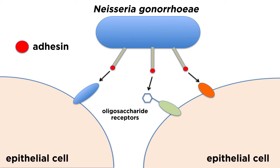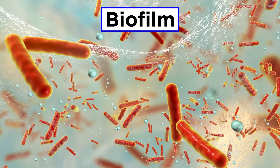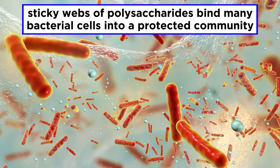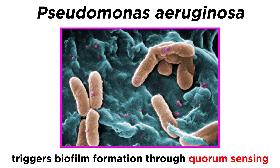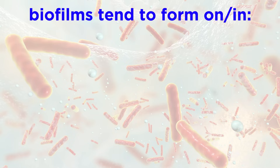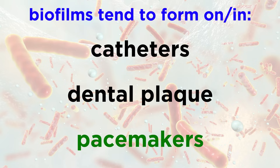Other bacteria express adhesion proteins in a variety of ways. Another bacterial adaptation that promotes colonization is the formation of biofilms, which are collectives of one or more types of microorganisms. Within a biofilm, bacteria form sticky webs of polysaccharides that bind bacterial cells together into a community, providing protection from antibiotics or host defenses. Bacteria like Pseudomonas aeruginosa can sense when enough bacteria are present and trigger biofilm formation through a process called quorum sensing. Biofilms are particularly common on catheters, in dental plaque, or on implanted surgical devices such as pacemakers.